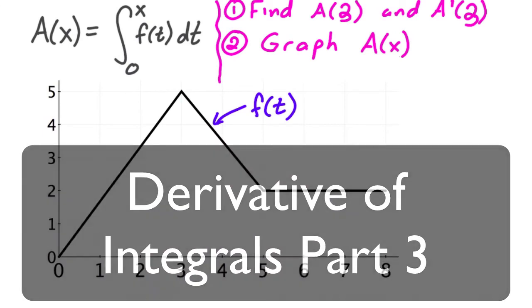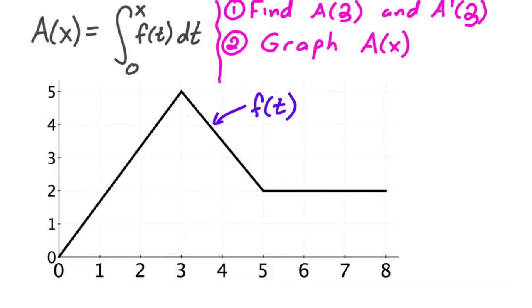Okay, so let's suppose we have a function here f(t) and A(x) is equal to the integral from zero to x of f(t) dt. So this is the area collecting function, notice starting at zero and then going up to whatever x is.